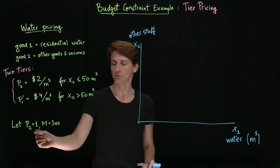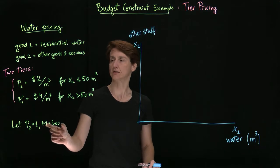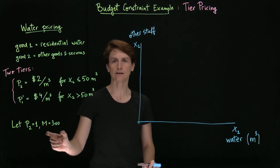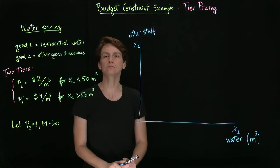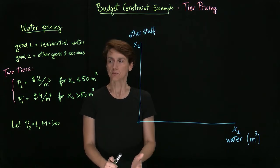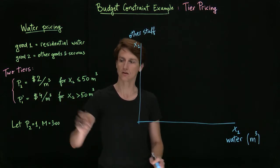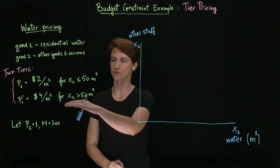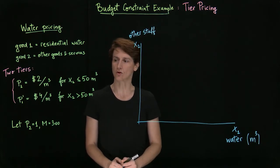As we said, we'll set the price of good two to one for convenience, and let's also consider M to be 300. M will therefore not be the household's full budget most likely, but this will make it easier to see the graph. Okay, so let's go ahead and draw the budget constraint. It might be easiest to draw it first as if this price applied everywhere, and then consider what happens when we increase price above a certain level.